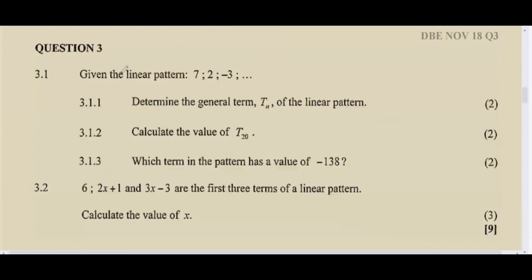We are given the question: given the linear pattern 7, 2, and negative 3. With a linear pattern there's always a constant difference between the terms. Question 3.1.1 asks us to determine the general term, or tn, of the linear pattern — the equation that defines this linear pattern.